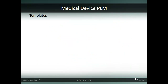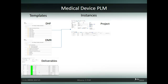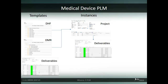This is a summary of the DHF and the DMR in the medical device solution. Template structures are created for a DHF and DMR. Deliverables and their corresponding closing rules, as well as where they will be placed in the DHF and DMR, are created. A project is used to instantiate the deliverables, and as work completes on the deliverables, they are automatically placed in the DHF and DMR.